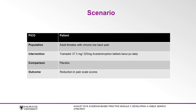In this example, the population is adult females with chronic low back pain. The intervention is tramadol with acetaminophen taken orally twice daily. The comparison is a placebo, and the outcome is a reduction in pain scale scores. We'll use this as our starting point.